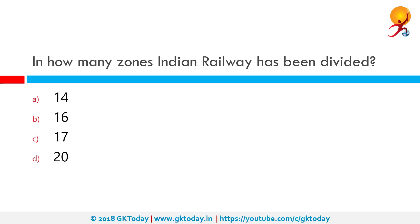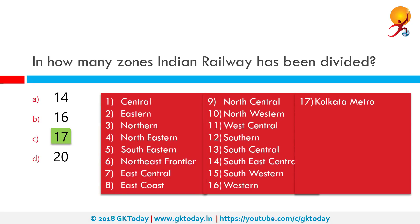In how many zones has Indian Railways been divided? The correct answer is 17 zones. They are: central, eastern, northern, northeastern, southeastern, northeast frontier, east central, east coast, north central, northwestern, west central, southern, south central, southeast central, southwestern, and western. These are the 16 zones in the country. Other than that, Kolkata Metro is considered the 17th zone.